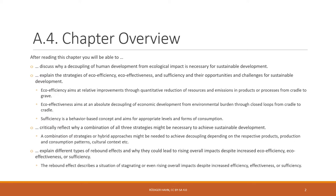The second strategy is eco-effectiveness. Eco-effectiveness aims at an absolute decoupling of economic development, human development, and environmental burden through closed loops. Rather than having a linear perspective on production and consumption, we now look at a circular perspective — from so-called cradle to cradle — so that the waste and by-products of any product become resources and raw materials again for other products. That's the main aim of eco-effectiveness.